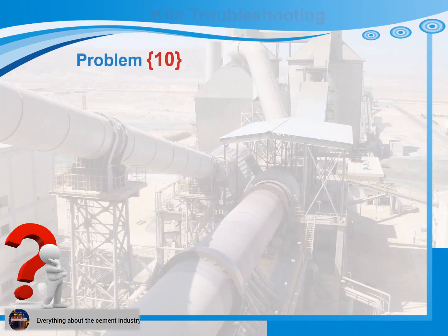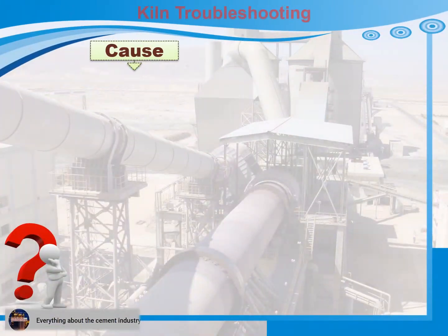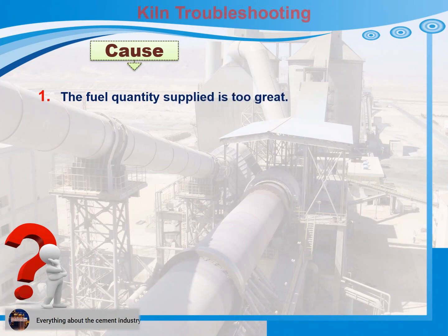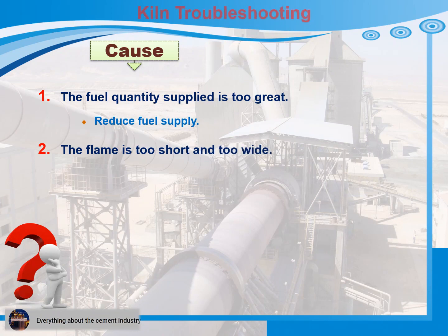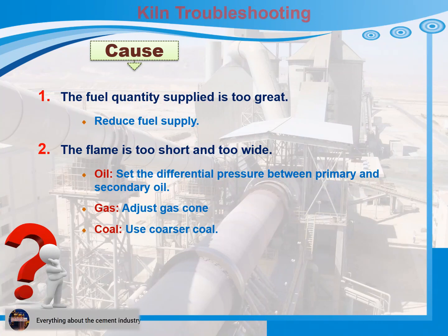Problem 10: Overburnt material in the clinkering zone. Cause 1: The fuel quantity supplied is too great. Recommendations for action: Reduce fuel supply. Cause 2: The flame is too short and too wide. Recommendations for action: 1) If oil is used, set the differential pressure between primary and secondary oil. 2) If gas is used, adjust gas cone. 3) If coal is used, use coarser coal. 4) Open axial air and reduce the swirling air.